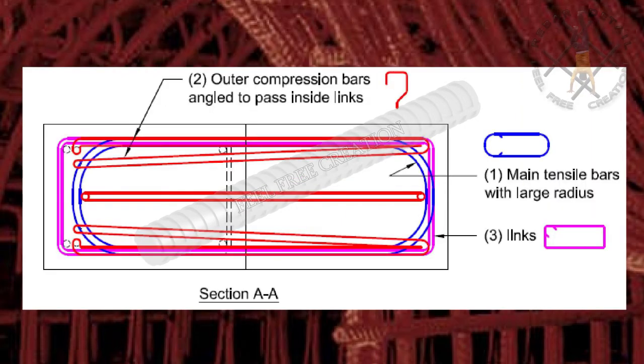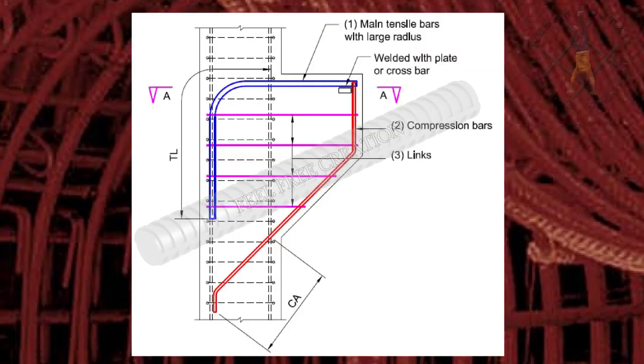It contains main tensile bars with large radius, like 180 degree bending shape code 13, and compression bars which are special shape and links like shape code 51.